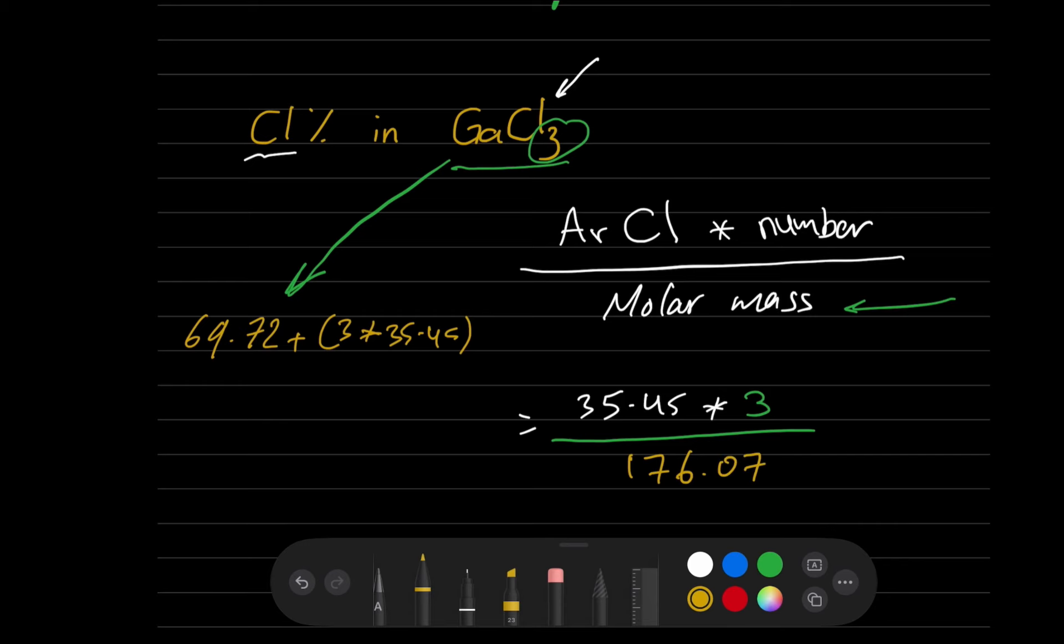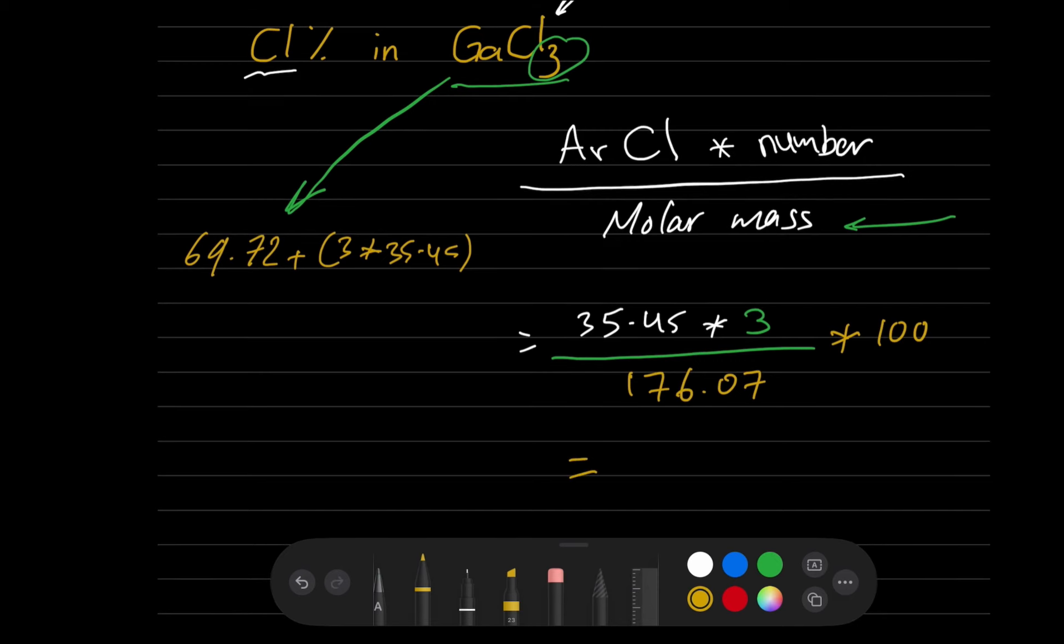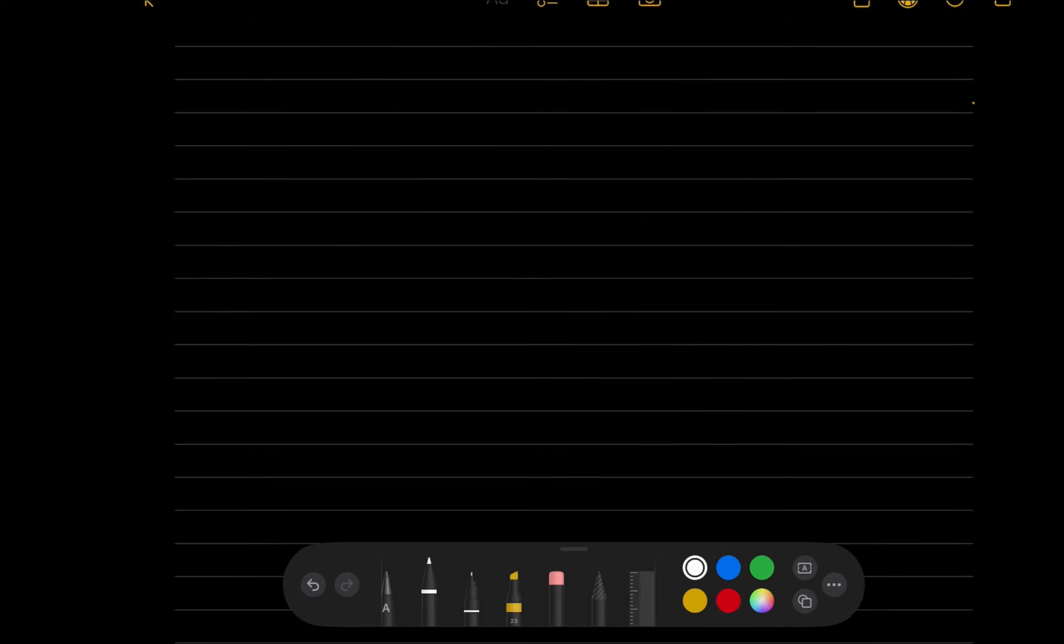And since you're talking about the percentage, the whole number is multiplied by 100. Then the percentage of the chlorine is equal to 60.4 percent. Let's take another example.